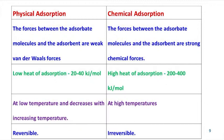The differences between physical adsorption and chemical adsorption are listed in this table. The forces between the adsorbate molecules and the adsorbent are weak van der Waals forces in the case of physical adsorption, whereas in chemical adsorption the forces are strong chemical forces. The heat of adsorption in physical adsorption is low, in the order of 20 to 40 kJ/mol, while in chemical adsorption it is high, in the order of 200 to 400 kJ/mol. Physical adsorption usually occurs at low temperatures and decreases with increasing temperature, whereas chemical adsorption occurs at high temperatures.